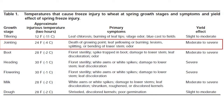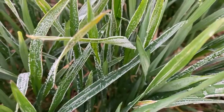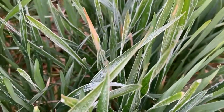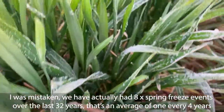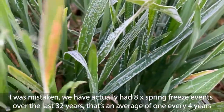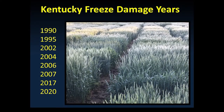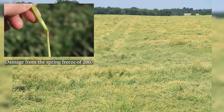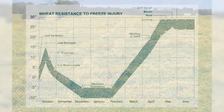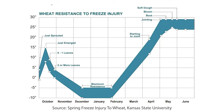Based on my experience over the past 32 years in Kentucky, we've had six spring freeze events, all of which have had an impact on wheat yields — ranging from major yield losses to not much injury at all. Sometimes we see stem damage, which influences lodging and has an indirect effect on yield. The most important factors are temperature, duration of temperature, and growth stage.